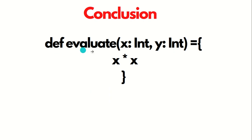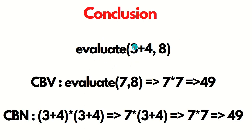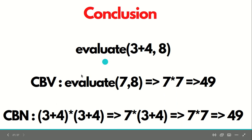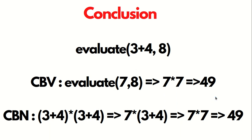Let's take one more example. Suppose we have a function that squares a number, with two parameters X and Y, but only X is used in the function body. If we pass three plus four comma eight: with call by value, it first evaluates to seven comma eight, then seven times seven equals 49. With call by name, three plus four is passed as is, so it becomes three plus four times three plus four, which evaluates to seven times seven equals 49. This marks the end of this video, in which I explained what a function is, how to create one, and the different evaluation strategies — the substitution model divided into call by value and call by name. Thanks for watching, see you in the next video.